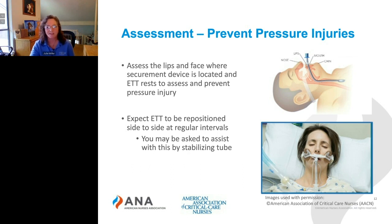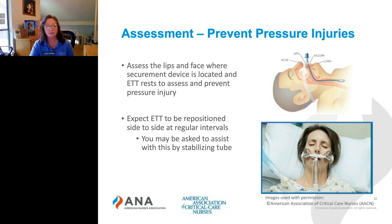You also want to assess where the endotracheal tube is lying on the lips and face to help prevent pressure injuries. Make sure the tube does not cause any pressure injuries to the lips or face. Assess the securement device and the surrounding area to ensure it is not causing pressure injuries as well. The endotracheal tube should be repositioned side to side at regular intervals — the respiratory therapist generally does this, but the ICU RN may ask you to assist by stabilizing the tube.